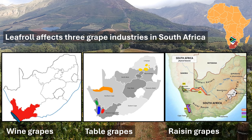The industries are basically the wine industry, centered down at the tip of Africa; table grapes, which border onto that area and are also produced in the Orange River and up in Limpopo; and thirdly the raisin grapes, which are also grown along the Olifants River and the Orange River.